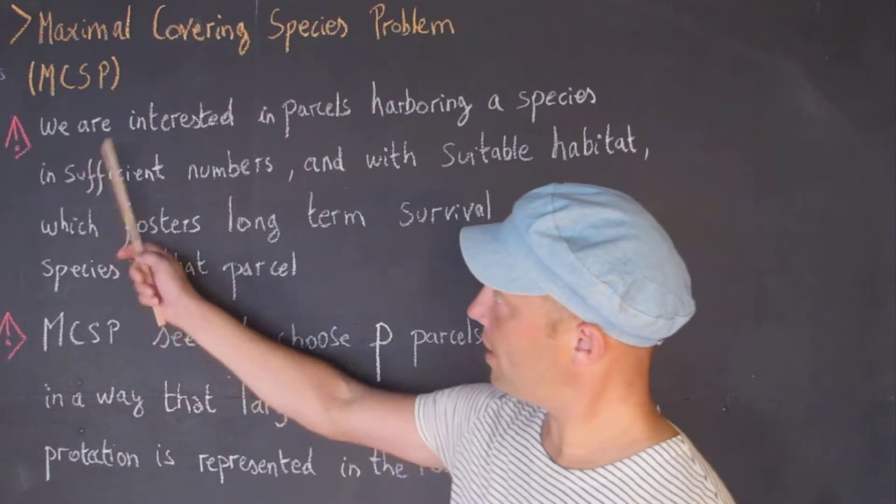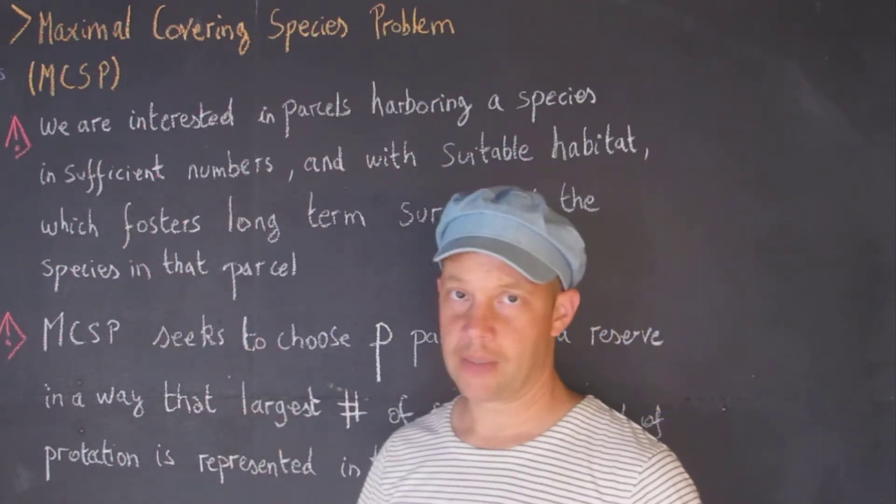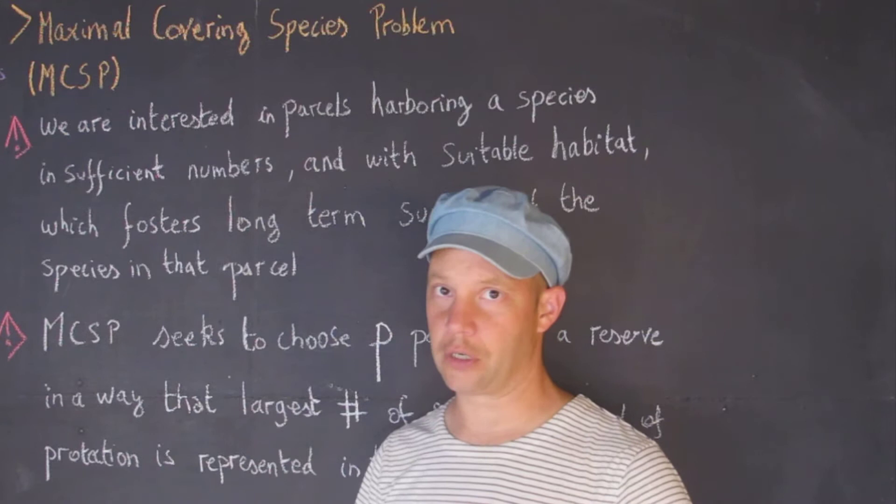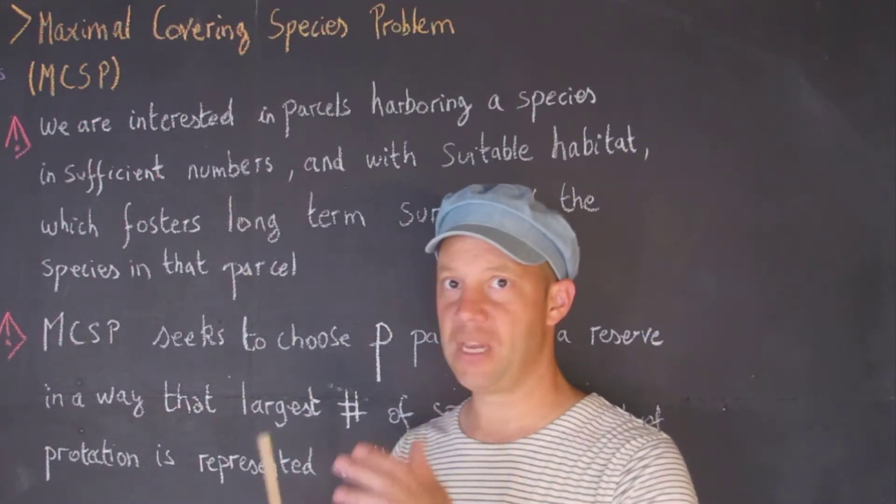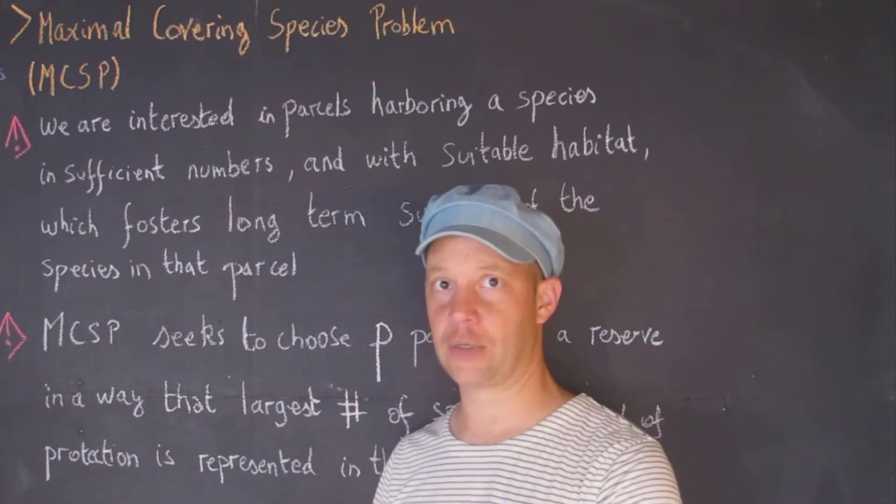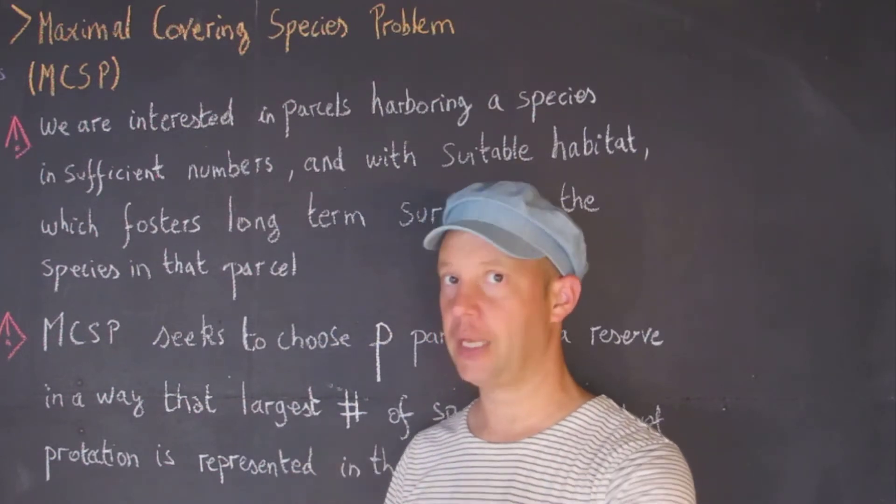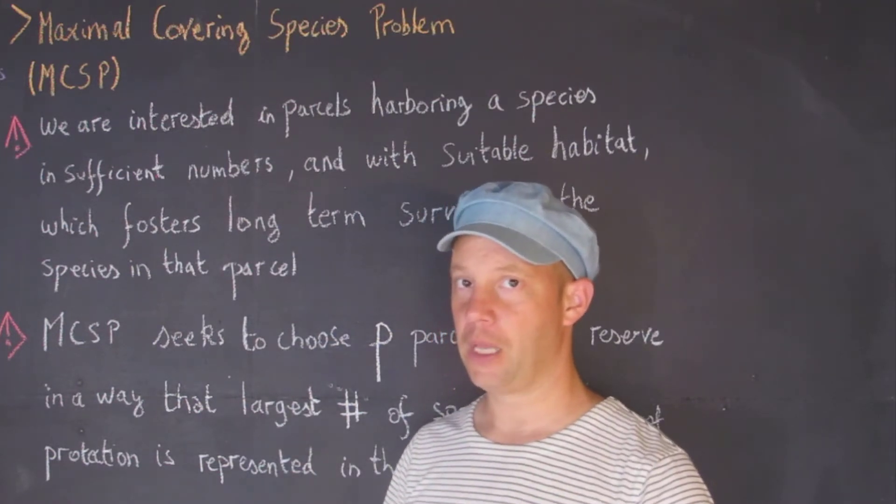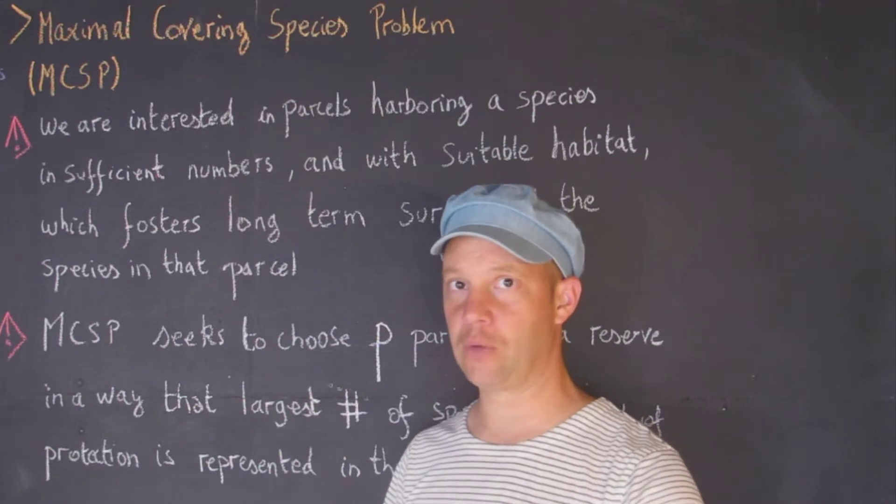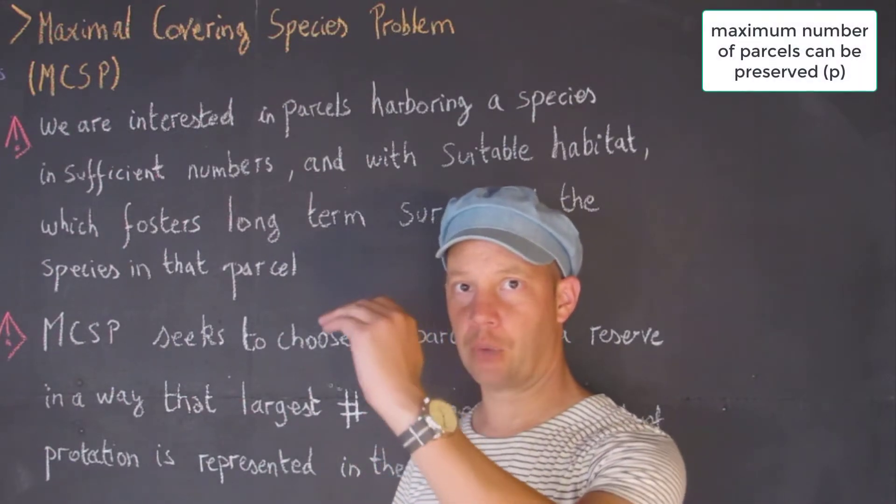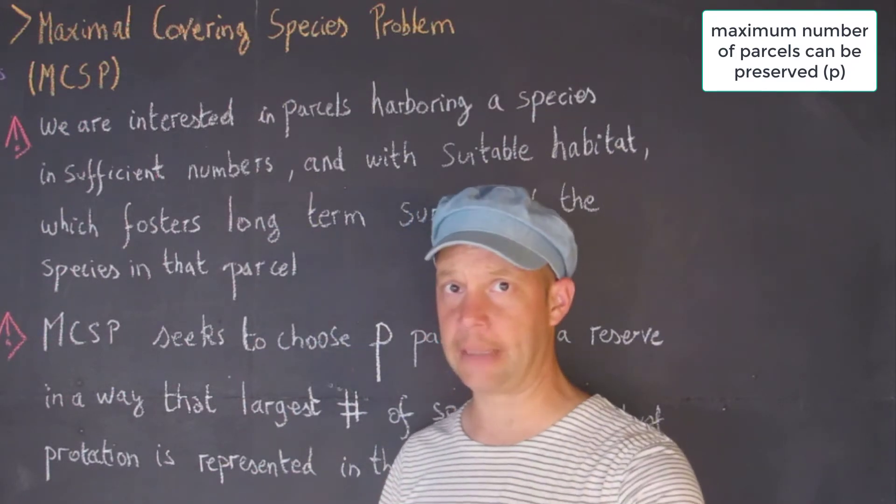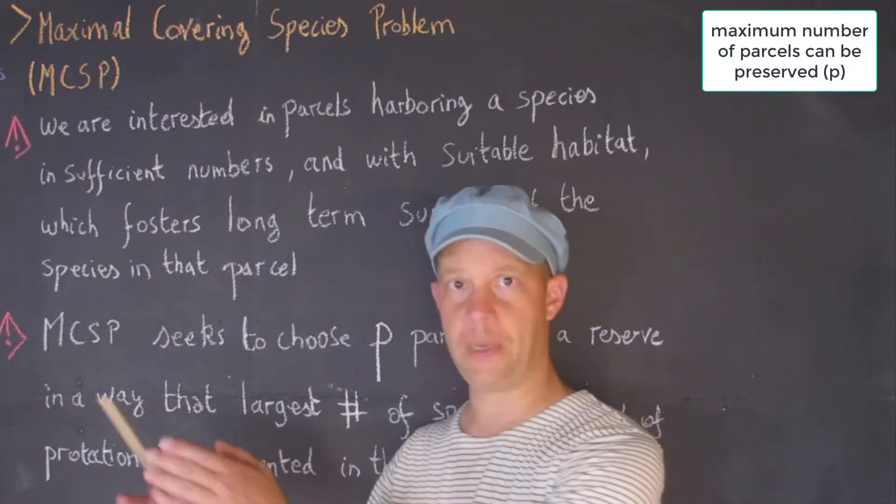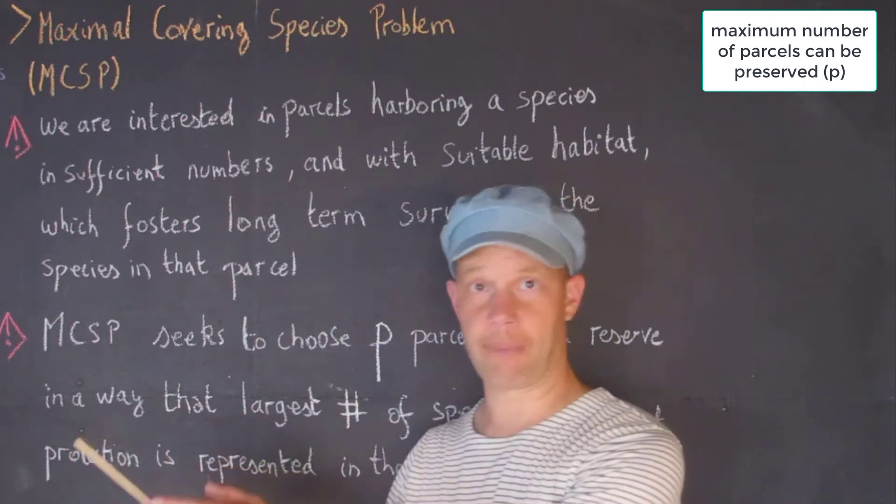What we were trying to do earlier in the species set covering problem was to minimize the number of parcels that were needed so that each species can be preserved. Here what we're going to do is set a maximum amount of parcels that we can set aside, so that could for instance be dictated by the budget, maybe a million or two million that a township has to buy or to maintain parcels.